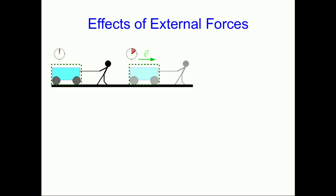Let's start with this example of a person using a rope to pull a cart. Our system is just the cart, and because of the person pulling on it the cart speeds up — that's because there's a force exerted on the cart by the rope. Note that the rope isn't in the system, so that's an external force.